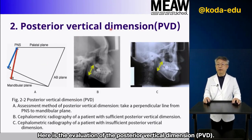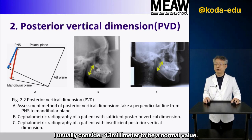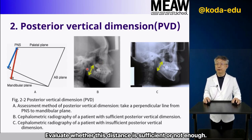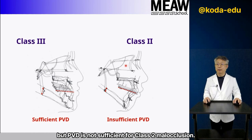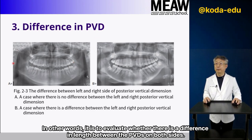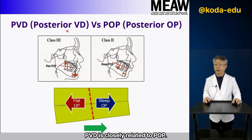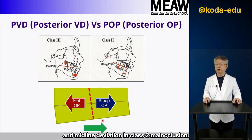Here is the evaluation of the posterior vertical dimension (PVD). PVD measures the distance from the P and S points to the mandibular plane. I usually consider 43 mm to be a normal value — evaluate whether this distance is sufficient or not. In general, PVD is sufficient for class III malocclusion but not sufficient for class II malocclusion. We also evaluate the left and right differences of PVD — whether there is a difference in length on both sides. PVD is closely related to POP: flat POP in class III malocclusion, steep POP in class II malocclusion, and midline deviation in asymmetry cases.